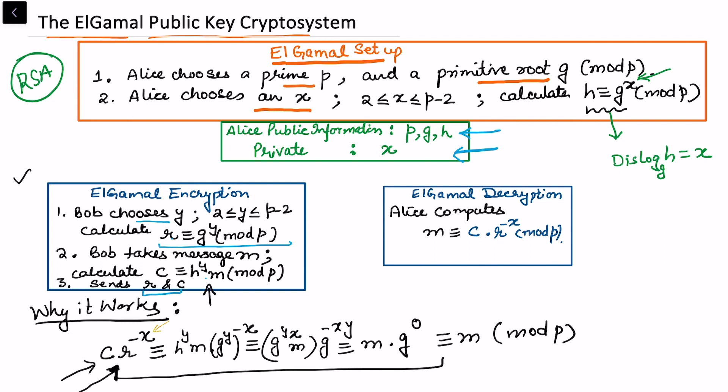So from this particular setup we can see that c * r^(-x) is the same as m. Because the information is not available publicly, we do not know about this x, so one cannot decipher the same message as m. Let's see this in an example. In this example, say Bob wants to send some message to Alice.